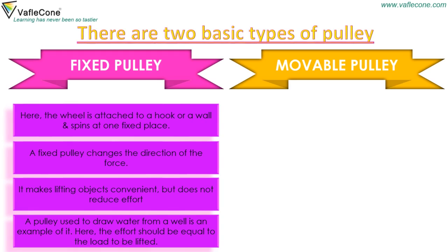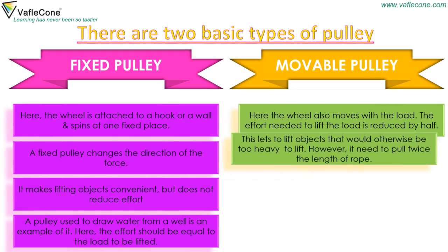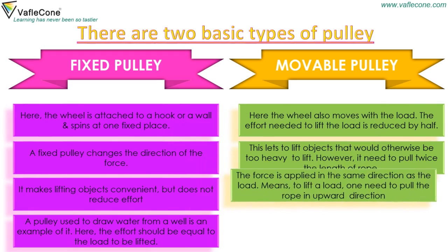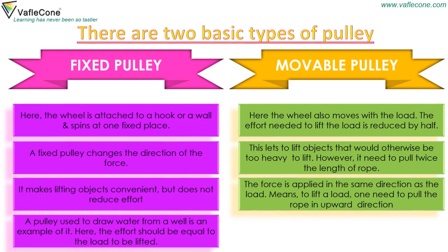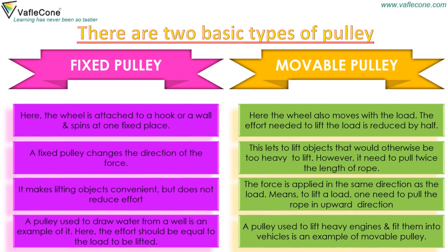In a movable pulley, the wheel also moves with the load. The effort needed to lift the load is reduced by half, allowing objects that would otherwise be too heavy to be lifted. However, one needs to pull twice the length of rope, and the force is applied in the same direction as the load — meaning to lift a load, one needs to pull the rope in an upward direction. A pulley used to lift heavy engines and fit them into vehicles is an example of a movable pulley.